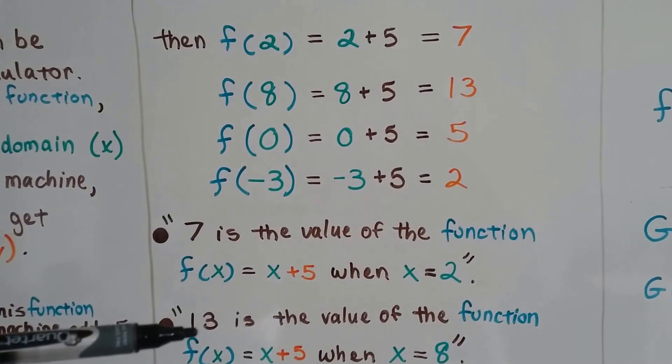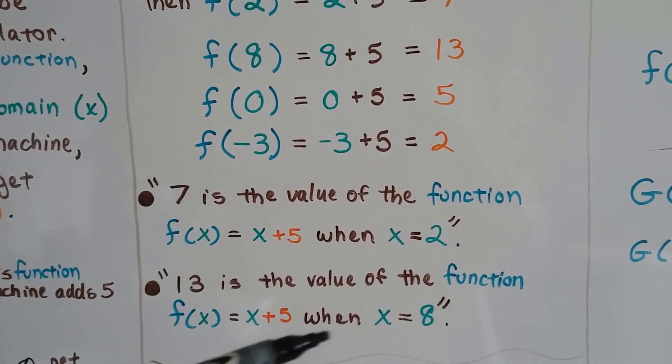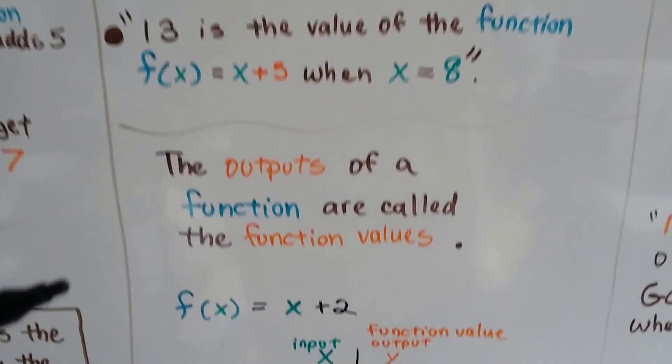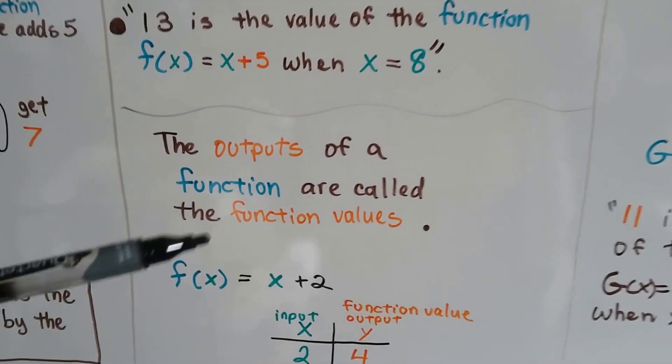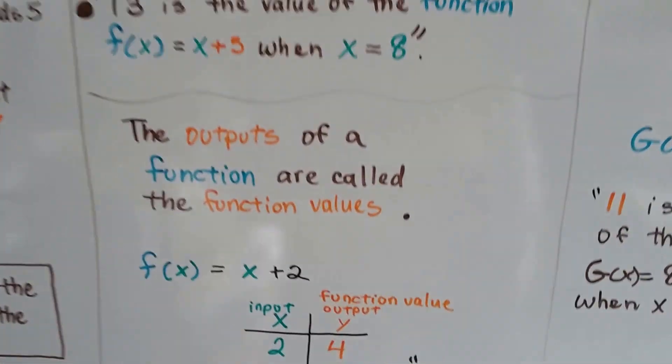And for this one, 13 is the value of the function f(x) = x + 5 when x equals 8. The outputs of the function are called function values. These orange guys are the function values or the outputs.